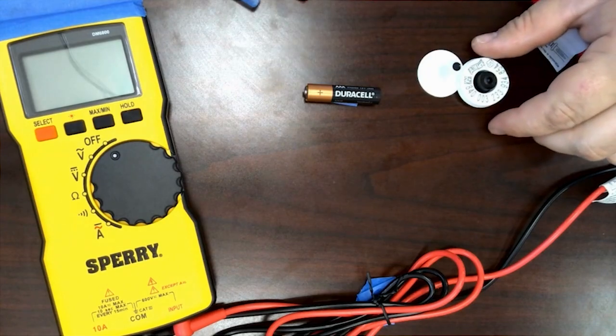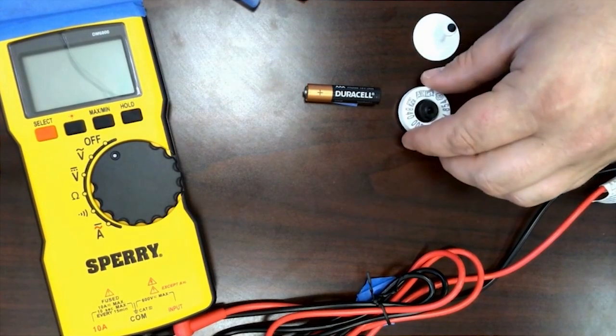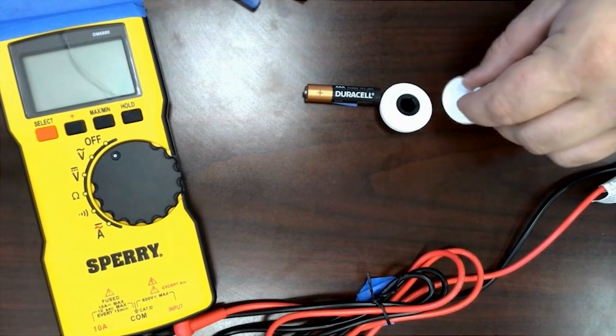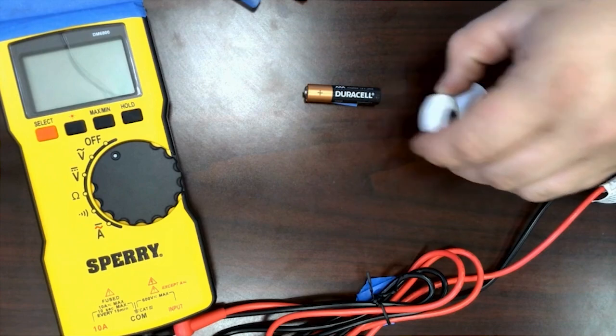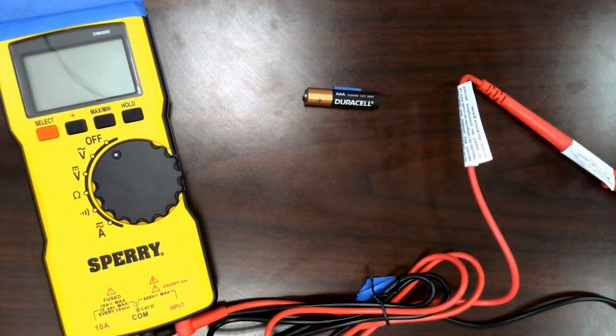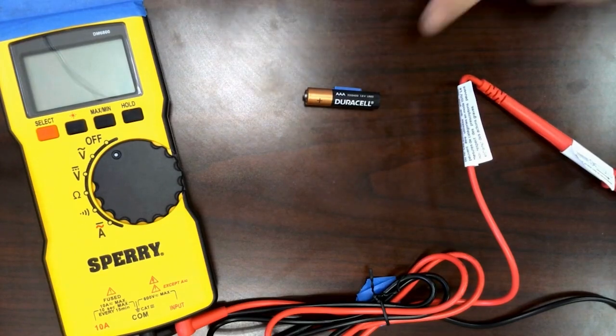So we will get started by taking apart these tags. We'll be looking at the easiest way to take them apart. They are built very tough out of some extremely hard plastic, but once we get inside of them we will find the transponder and test it. So let's get started with the battery.